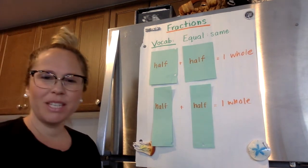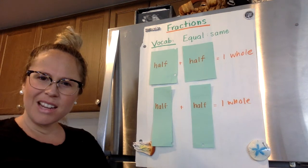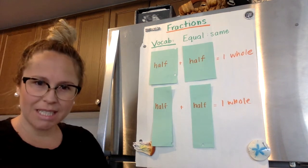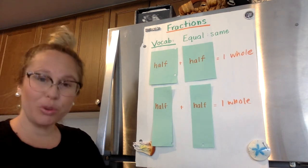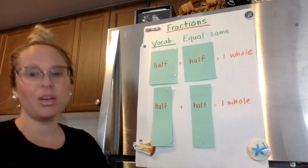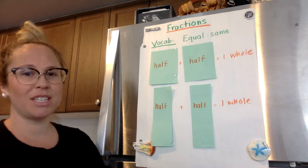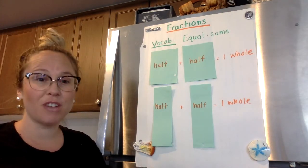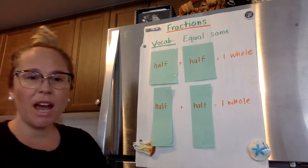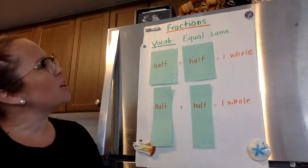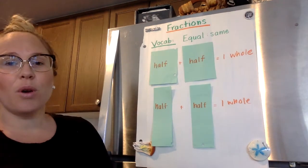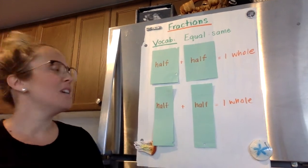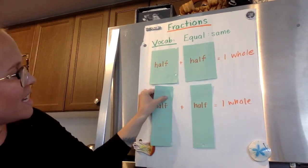My question to you is: what makes these halves? The answer is that there is one of two pieces. When there are two pieces, that means we've broken something into halves. The word I want to become part of your vocabulary when talking about fractions is the word "equal." When we talk about equal and fractions, equal means the same size.